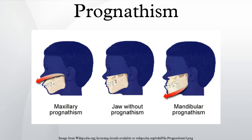In disease states, maxillary prognathism is associated with Cornelia de Lange syndrome. However, so-called false maxillary prognathism, or more accurately retrognathism, where there is a lack of growth of the mandible, is by far a more common condition. Prognathism, if not extremely severe, can be treated in growing patients with orthodontic functional or orthopedic appliances. In adult patients, this condition can be corrected by means of a combined surgical-orthodontic treatment, where most of the time a mandibular advancement is performed.